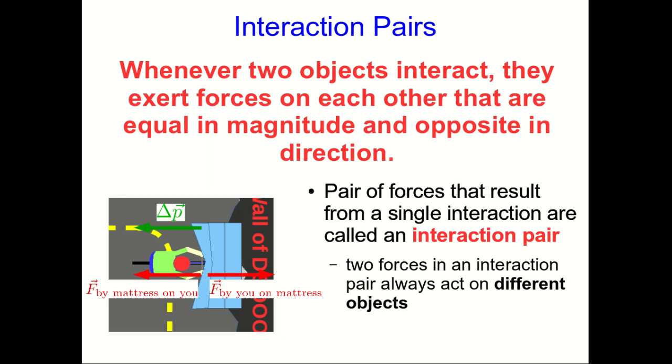But the other thing to realize about interaction pairs that's always true is that they always act on two different objects. In this example, one of these forces is a force that the mattress exerts on you, whereas the other one is a force that you exert on the mattress.